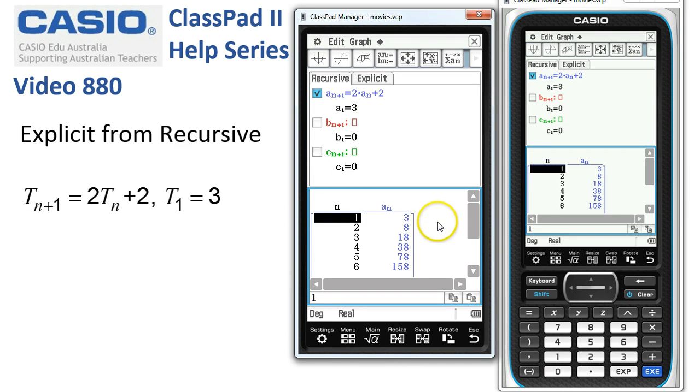So all is looking pretty good so far. Now, in this window, we're just going to tap on the run sequence run window here.